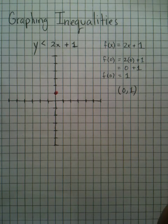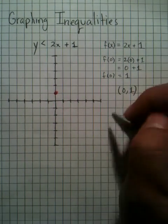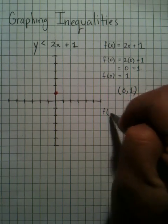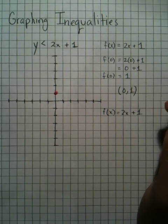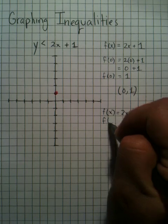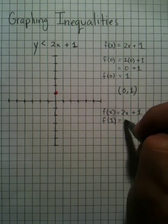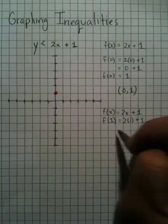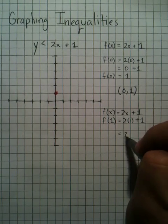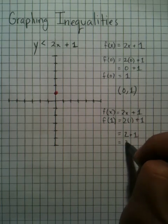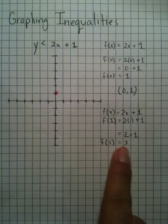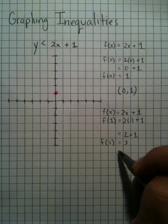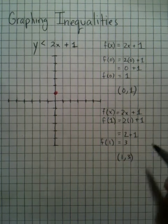Again, use this same idea of input and output to find another coordinate. I want my input now to be the number 1. So instead of x, we'll use 1. So 2 times 1 plus 1 is the same thing as 2 plus 1, which is the same thing as 3. So when you use the input of 1 into the function, you get 3 as an output. Again, that's just a really fancy way of saying 1 comma 3. Well, 1 comma 3 is right here.